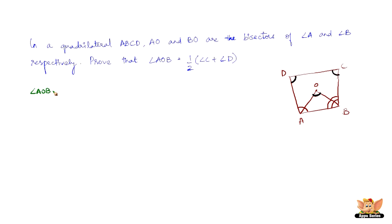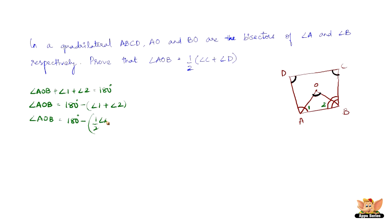In triangle AOB, angle AOB plus angle 1 plus angle 2 equals 180 degrees. Therefore, angle AOB equals 180 degrees minus the sum of angle 1 and angle 2. Since angle 1 is half of angle A and angle 2 is half of angle B, angle AOB equals 180 degrees minus half of angle A plus half of angle B, which simplifies to 180 degrees minus half of the quantity angle A plus angle B.